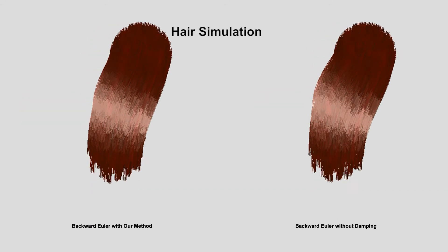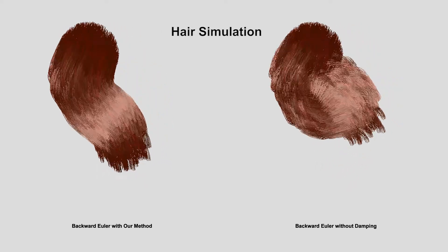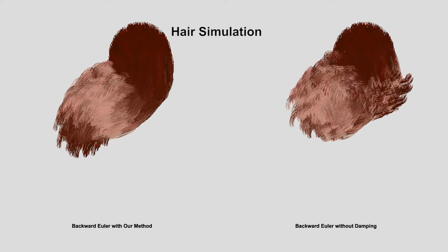In this hair simulation, the artificial numerical damping of backward Euler is not sufficiently strong. We can use our method to produce nicer hair motion.